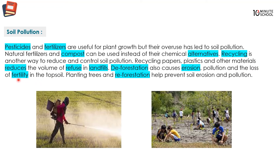The loss of fertility in the topsoil means the upper layer of soil loses its ability to support plant growth. Planting trees and reforestation help prevent soil erosion and pollution. Reforestation means bona yon — replanting forests — and it helps reduce soil erosion and soil pollution.